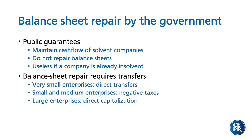In Germany and many other countries, we now have direct transfers to very small enterprises — helicopter money for these companies. Germany also has a huge fund for the direct capitalization of large enterprises, in the same way as banks were recapitalized in the financial crisis. But what is also needed are effective transfers for small and medium enterprises. Here, I think the only way to help them are negative taxes — some kind of rebate on the taxes paid last year, received as a transfer.